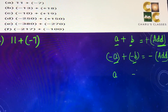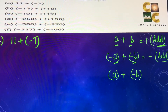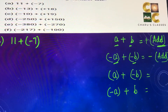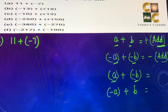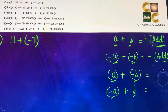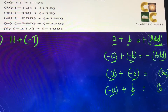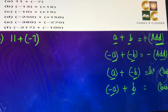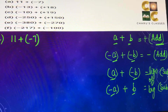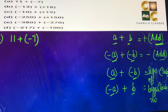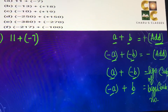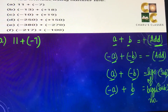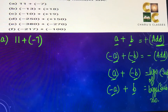When one number is positive and one is negative, we subtract them, and the sign of the bigger number comes. For example, if minus 20 plus 13: we subtract, and since 20 is the bigger number and it is negative, the answer is negative.